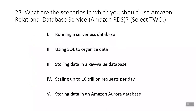Question twenty-three: what are the scenarios in which you should use Amazon Relational Database Service (Amazon RDS)? The correct answers are using SQL to organize data and storing data in the Amazon Aurora database. For the other three options, you should use Amazon DynamoDB.